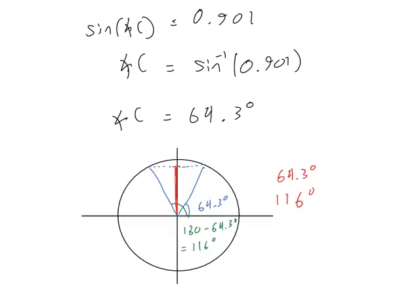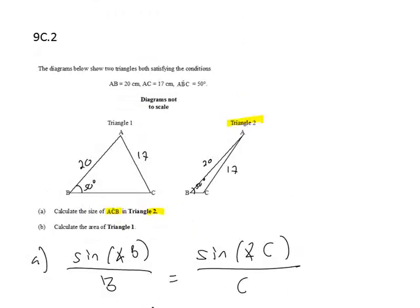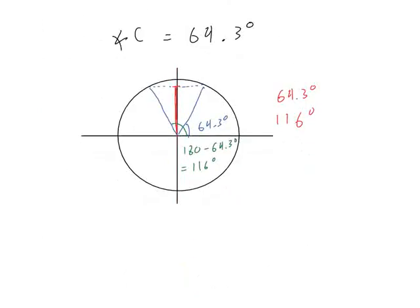Now, which is the correct angle for triangle two? Well, it says the diagram is not to scale, but from the diagram, it's clear that one angle is meant to be acute, and one angle is meant to be obtuse. The two solutions we found are for the two triangles, this one being 64.3 degrees and this one being 116 degrees. And so what we can say, then, is that for triangle two, the angle ACB should be equal to 116 degrees, as opposed to 64.3 degrees.